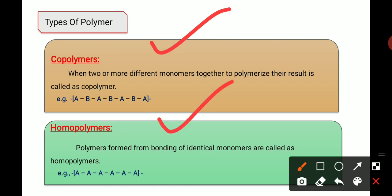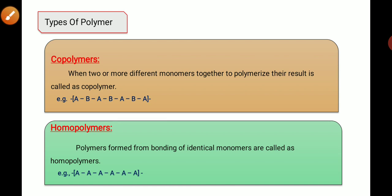Copolymer: when two or more different types of monomer are joined together, they form a copolymer. For example, A is one type of monomer and B is another type of monomer. When these two different types of monomers join together, they form a copolymer.